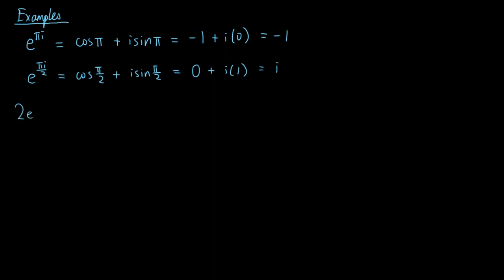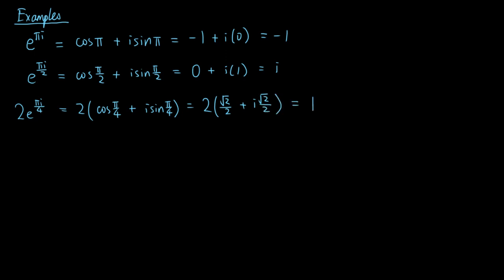Then, 2 times e to the πi/4 equals 2 times (cos(π/4) + i sin(π/4)), which equals 2 times (√2/2 + i√2/2), which equals √2 + i√2. Lastly, e to the −πi/6 equals cos(π/6) − i sin(π/6), which equals 1/2 − i√3/2.